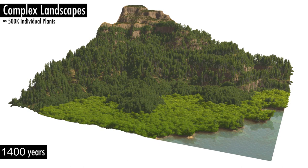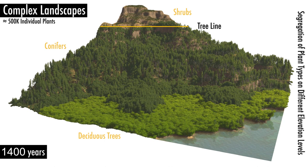Due to the different temperature resilience, one can observe a segregation of dominant plant types on different elevation levels. The deciduous trees are the primary plant type in lower regions, whereas the shrubs are dominating in higher regions and conifers are mostly present in between. These results mirror common natural landscapes as well as their evolution processes.